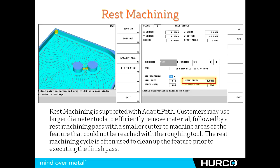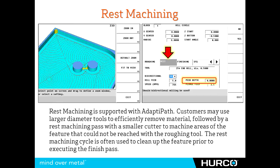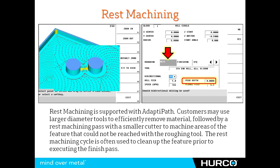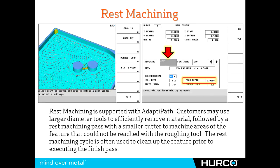We also have a rest machining tab now. Under the red arrow there's a tab you can select — there's a tab for the roughing tool, the rest tool, and the finish tool. The rest tool allows us to use a larger tool for roughing to remove the majority of the material in this pocket, and then use a smaller diameter tool to remove the rest of the material that the larger tool could not get. We can do that in peck depths if necessary, because with a smaller tool we probably won't be able to just bury it into the large amount of remaining material.